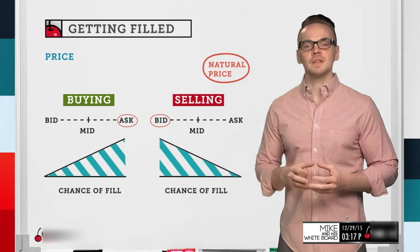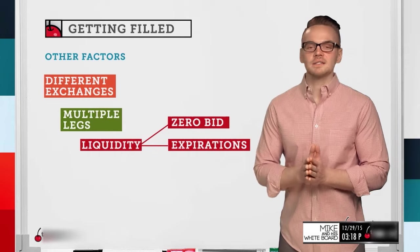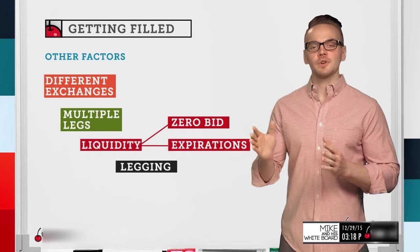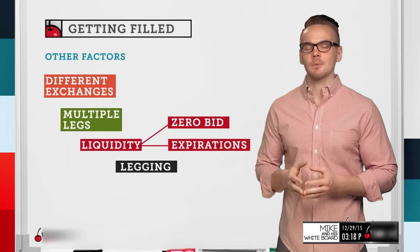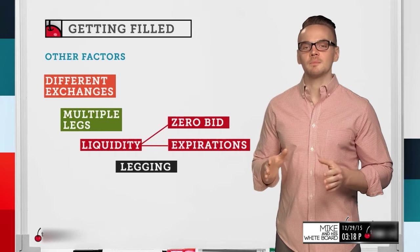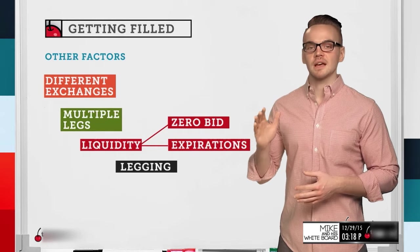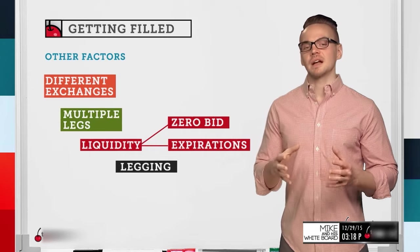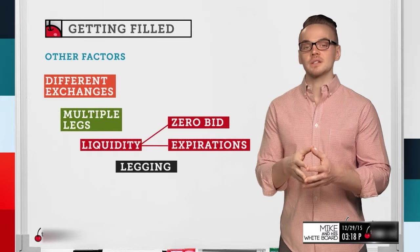Even if I'm at the natural price and still not getting filled, there's another thing to consider: different exchanges. When looking at the platform, it takes orders from different exchanges and shows us the average price. So if I route a limit order to sell a put at 50 cents, there might be multiple exchanges — some at 55 or 52 cents and some lower. If it routes to an exchange that doesn't match that price specifically, there might be a temporary issue getting filled. I might get filled in a minute or two, but it might not happen right away.